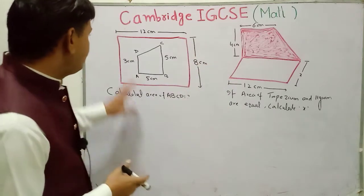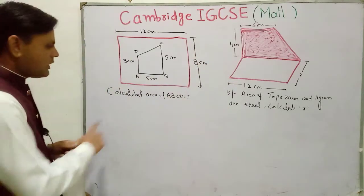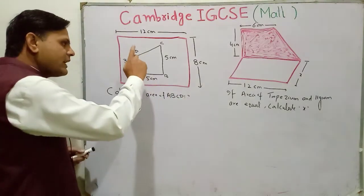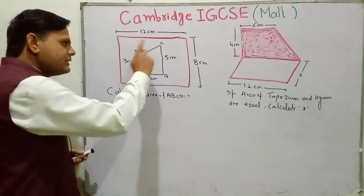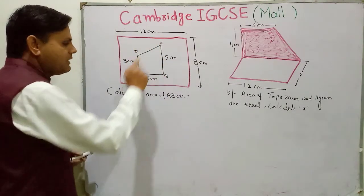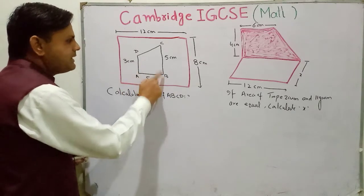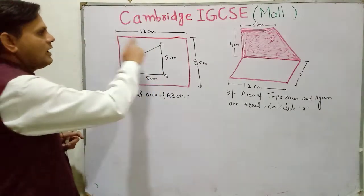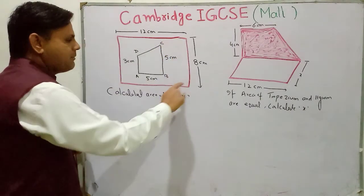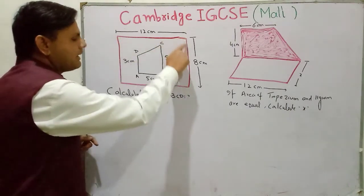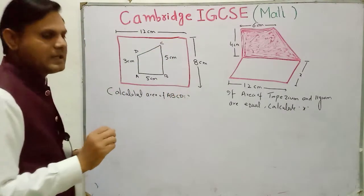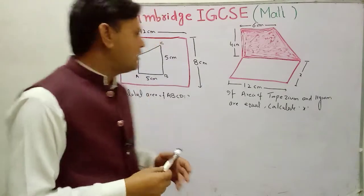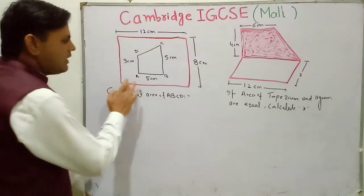The first question: calculate the area of ABCD. We need to find the area of this shape. This shape is a rectangle. In the previous lecture I told you how to find the area of a rectangle, so first I'll find the area of this rectangle.